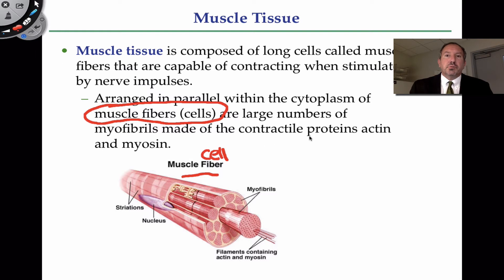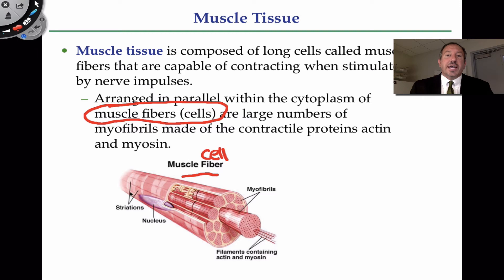These contractile proteins — actin and myosin — require a pretty good microscope to see the thick filaments (myosin) and thin filaments (actin). But interestingly, from the light microscope you can see a side perspective showing dark, light, dark, light — almost as if there are lines or striations. One of the characteristics of skeletal muscle is that it's highly striated, and that has to do with the gaps between the actin and myosin when viewed from the side.